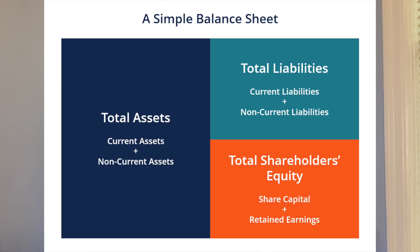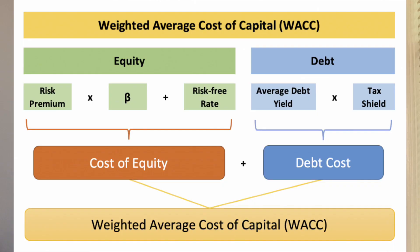Before we get into the WACC formula, let me give you a little bit more context into what the weighted average cost of capital is. If you look at any company, they can raise money in different ways — the most common ways are through debt and equity, which you can find on the company's balance sheet. The cost for raising debt and the cost for raising equity is different and depends on the type and the company itself. In simple terms, WACC allows you to see the average cost a company has from raising debt and equity — this mix is also known as the capital structure of the company.